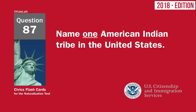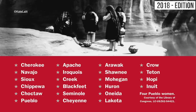Name one American Indian tribe in the United States. USCIS officers will be supplied with a list of federally recognized American Indian tribes. Cherokee. Navajo. Sioux. Chippewa. Choctaw. Pueblo. Apache. Iroquois. Creek. Blackfeet. Seminole. Cheyenne. Arawak. Shawnee. Mohegan. Huron.